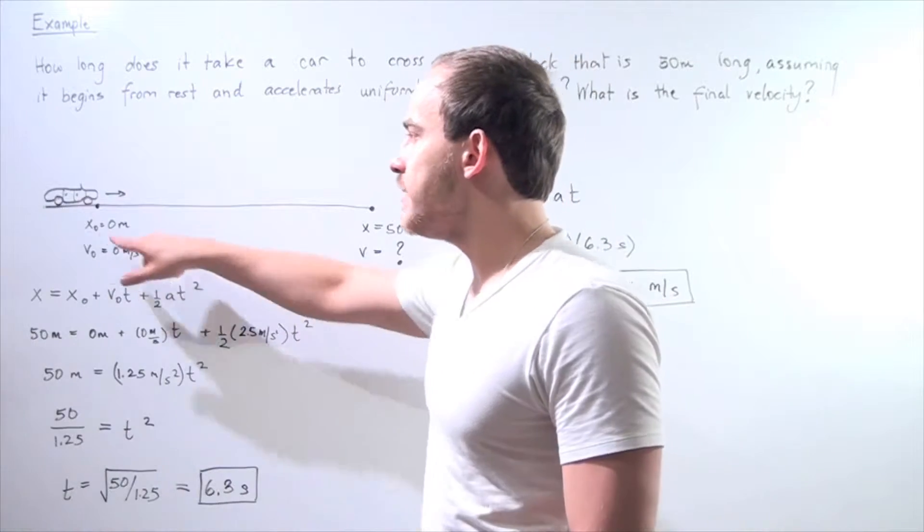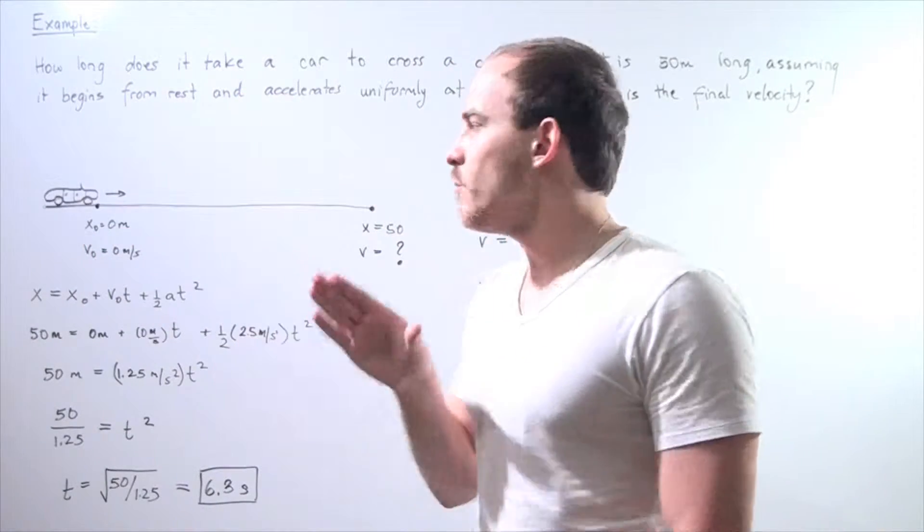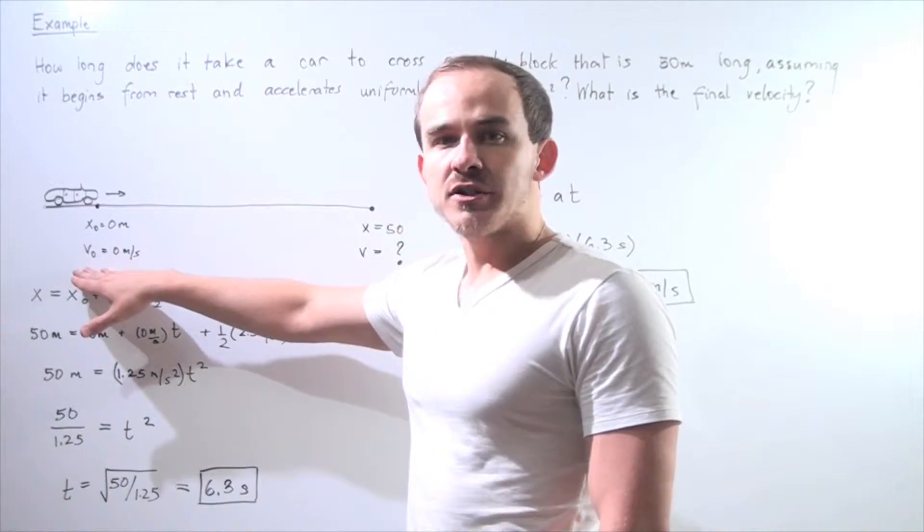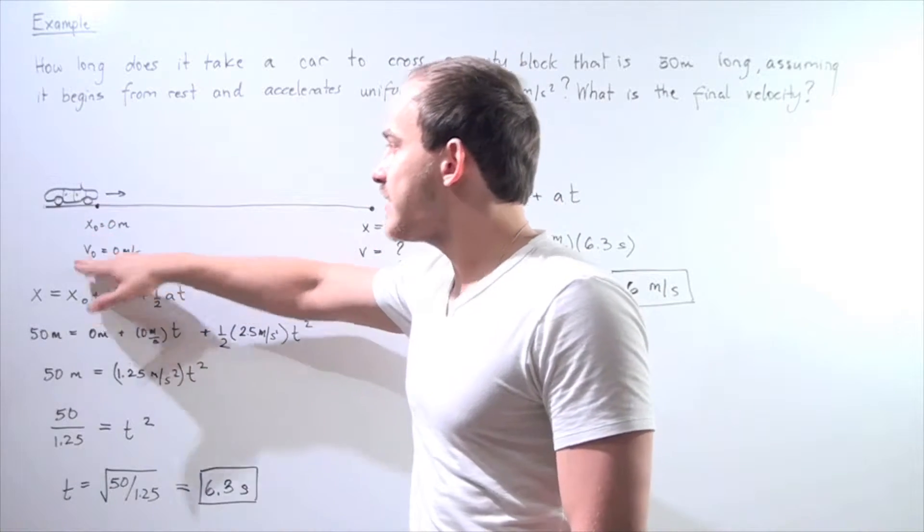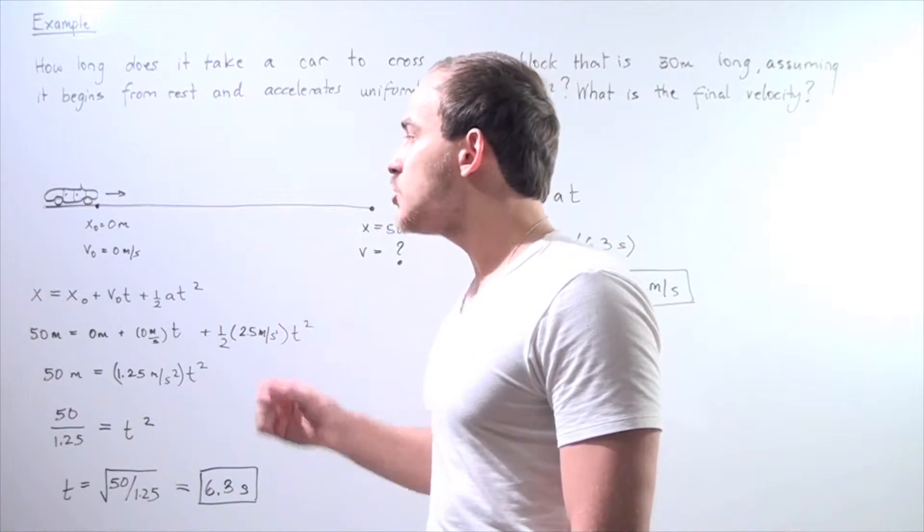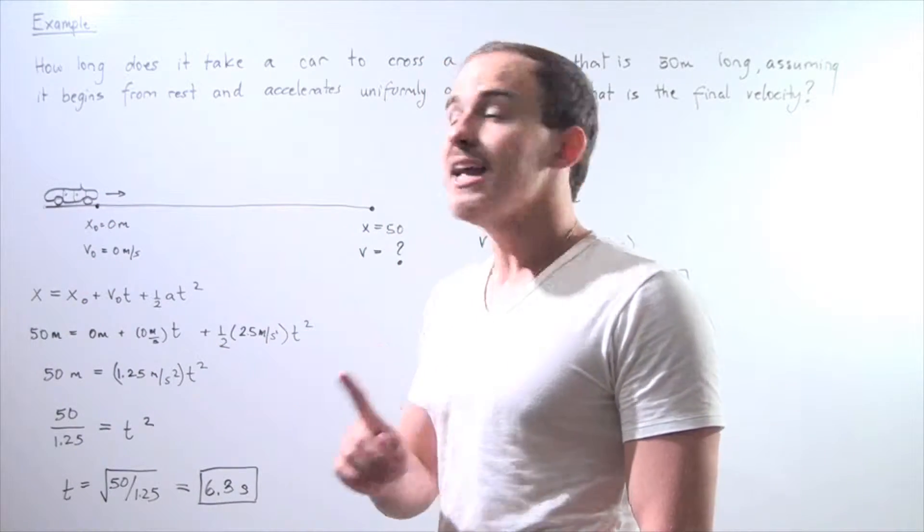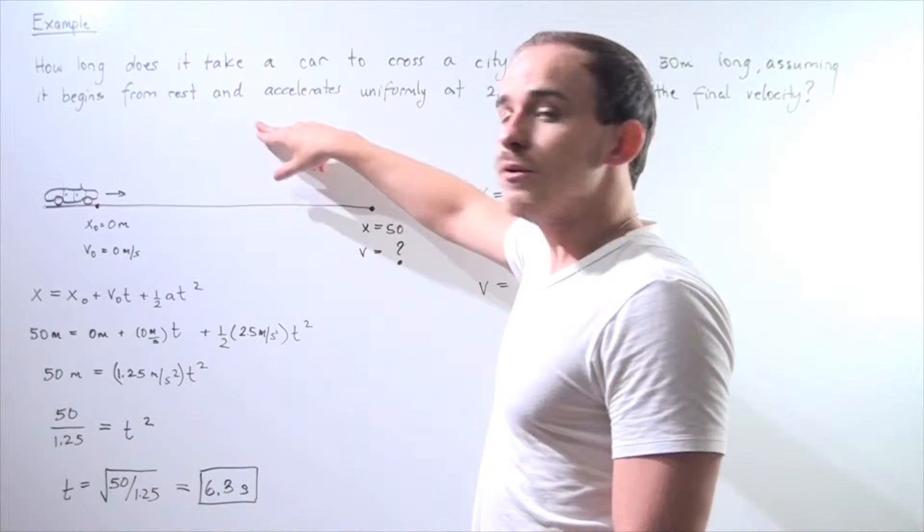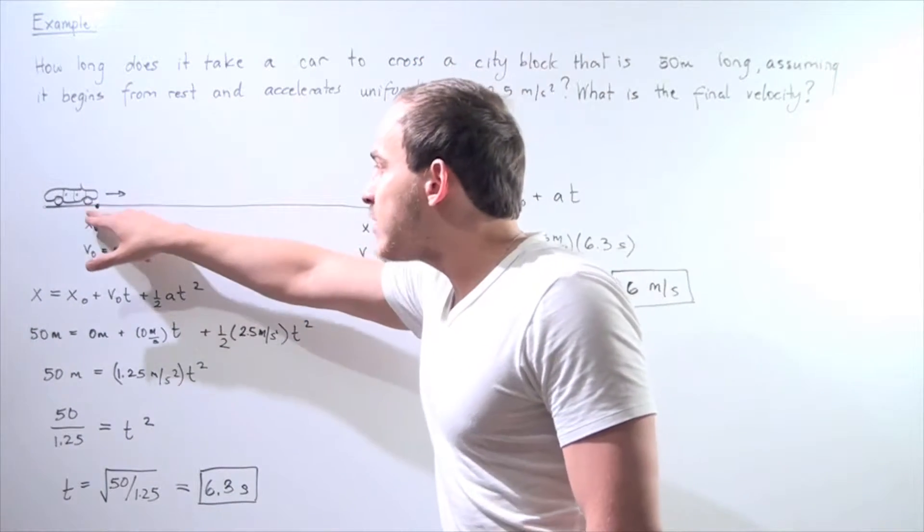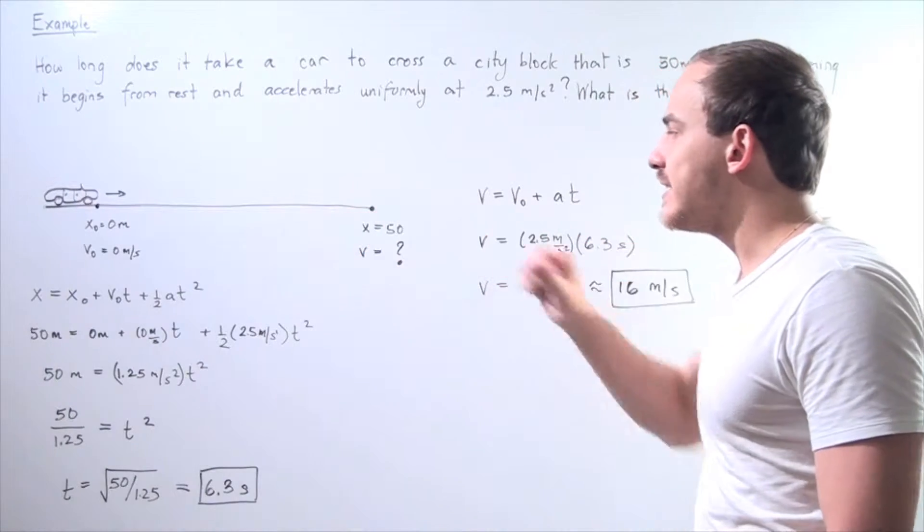Let's set this initial point to be x naught equals 0 meters. The initial velocity at that point is also 0 meters per second because our car begins from rest. Now, when it actually travels our final distance,